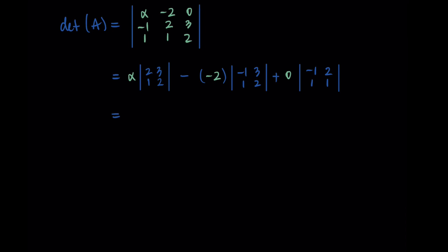Then I'm adding 2 times negative 1 times 2 minus 3 times 1. And then I'm adding zero times negative 1 times 1 minus 2 times 1.